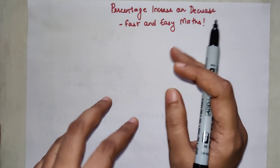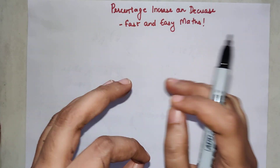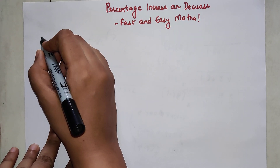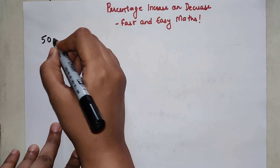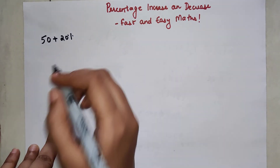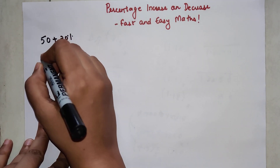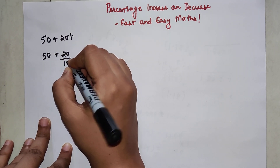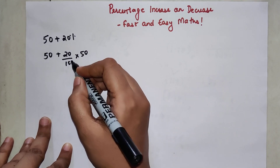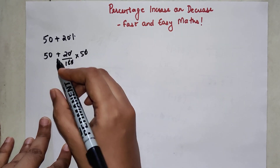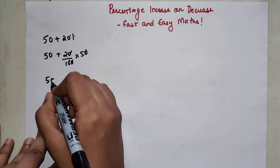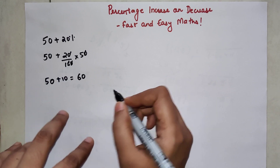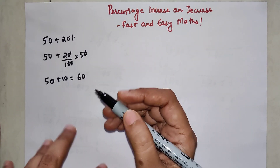So let's say if we had to increase 50 by 20 percent. The traditional method is basically 50 plus 20 upon 100 into 50, and then you do the calculations, so you get 50 plus 10, and the answer is 60.